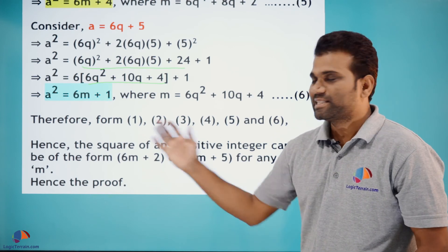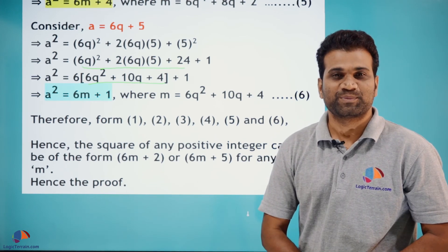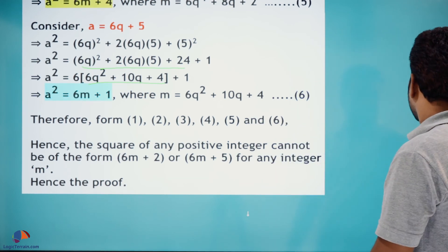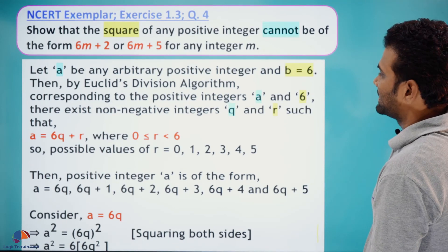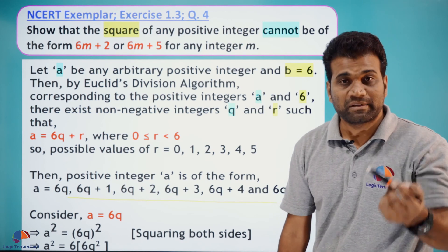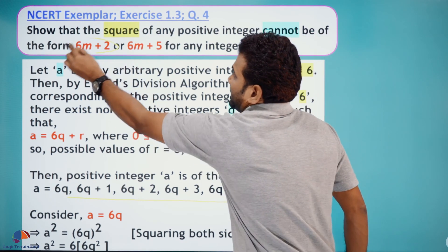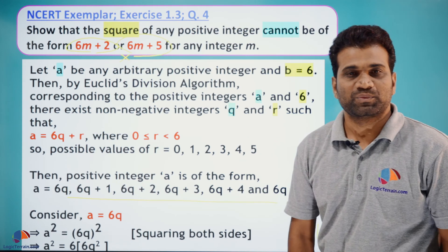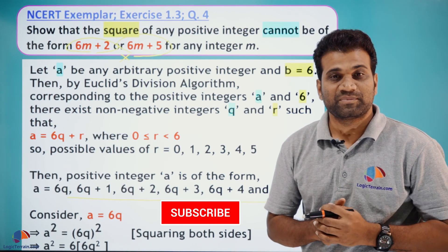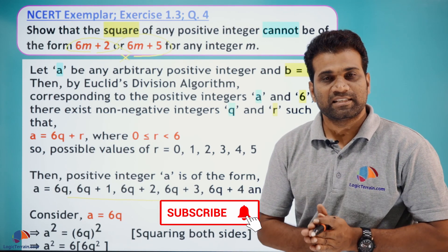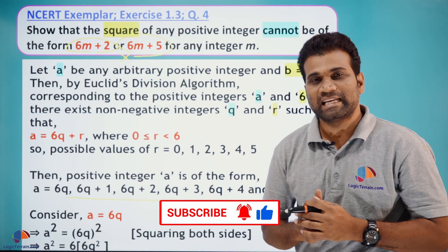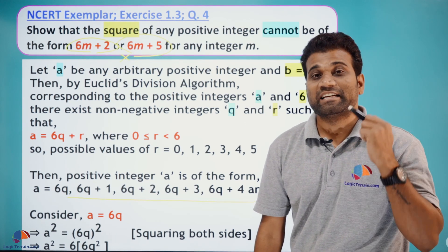So to summarize: if 'a' is a positive integer and b=6, the square of 'a' cannot be of the forms 6m+2 or 6m+5. Hope you understood clearly. We'll end this session here and meet again in the next session with a very interesting question. Till then, signing off — take care and have a great day!